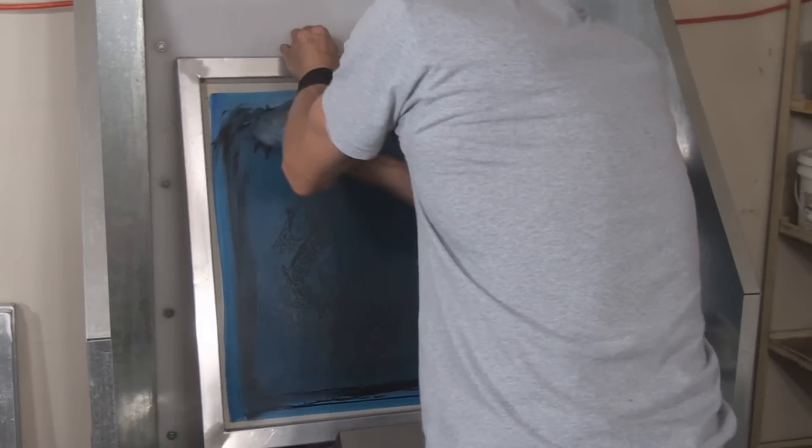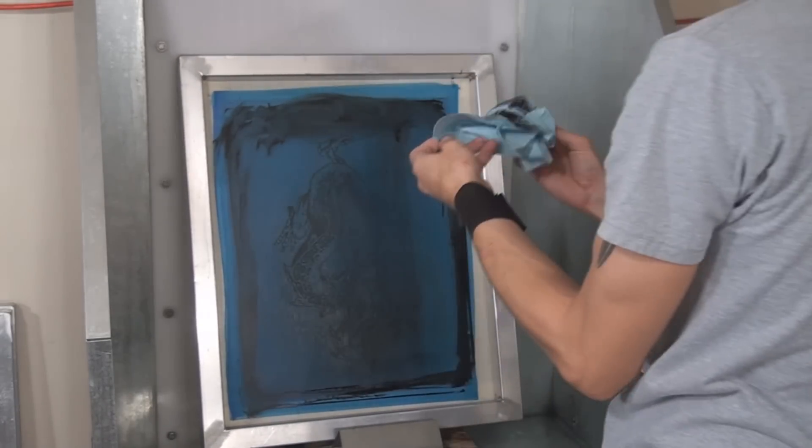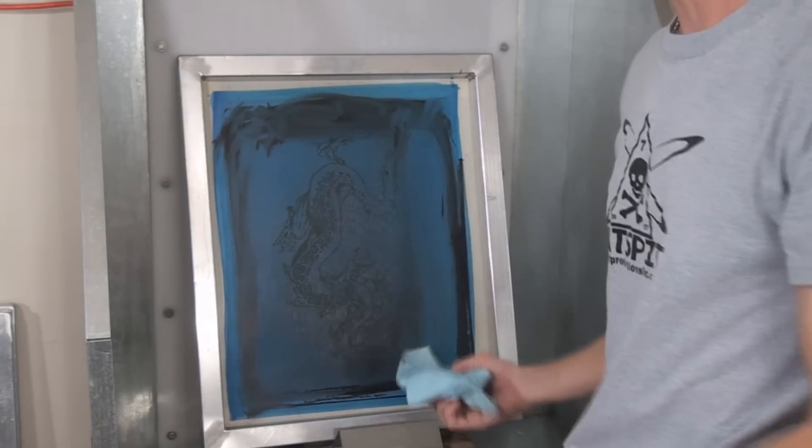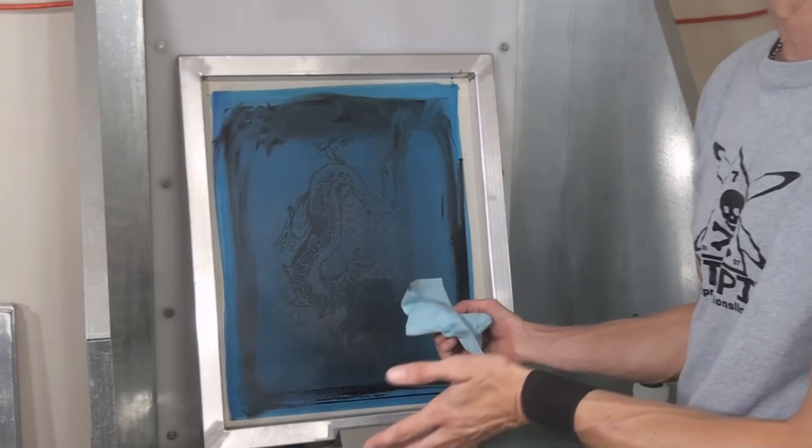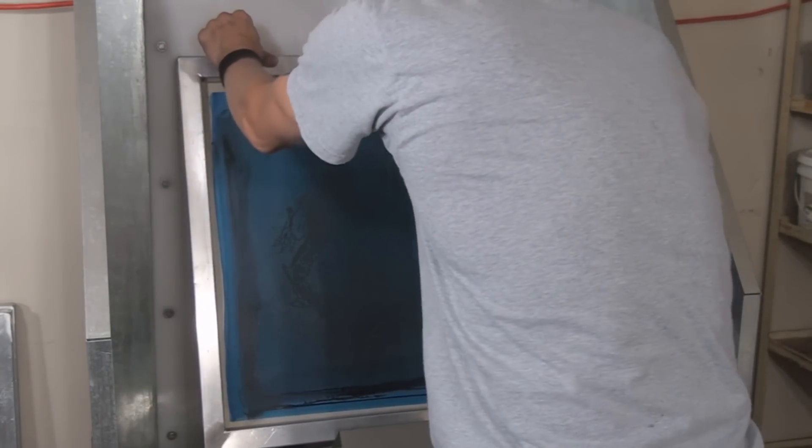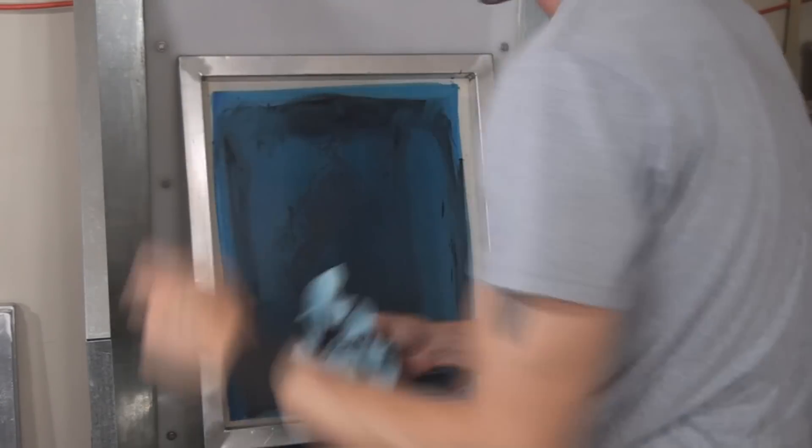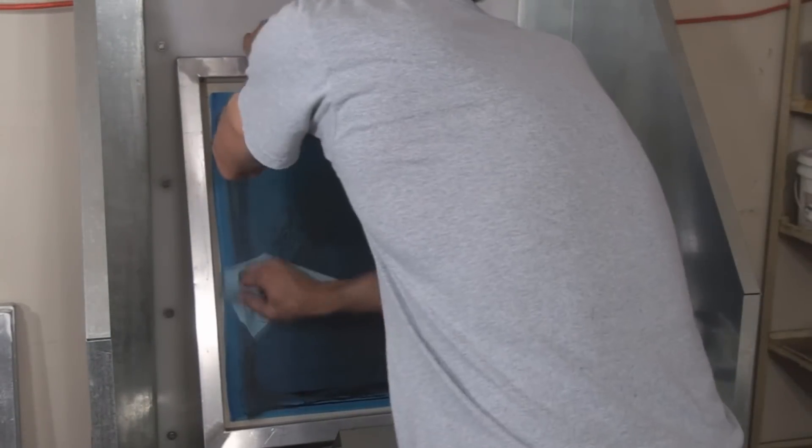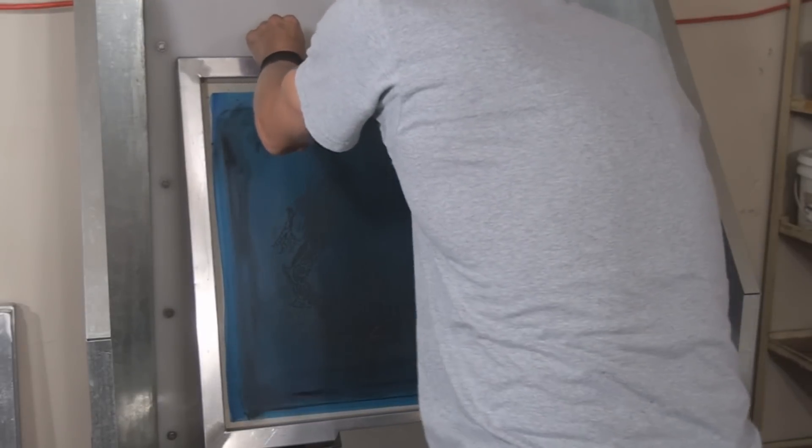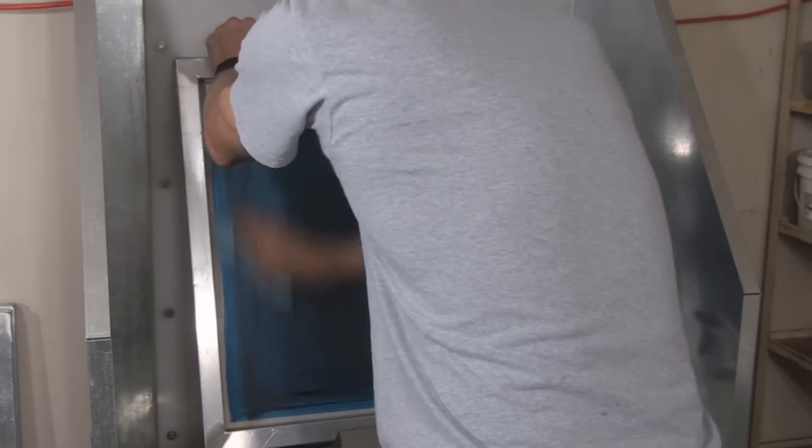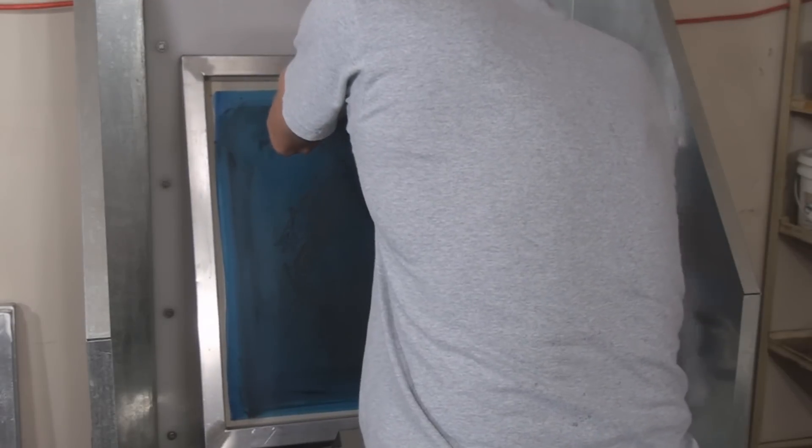So anywhere there's a little bit of extra ink buildup, and when you're printing a lot longer, I only printed a couple shirts with this, so there's not much ink around, but when you've been printing a lot, you can tend to have a little bit of ink around the edges, or maybe on the side of the frame.